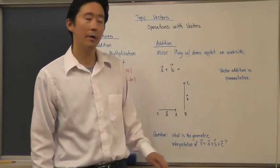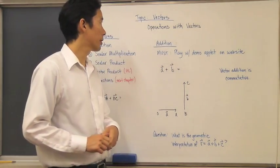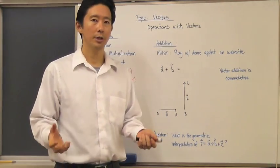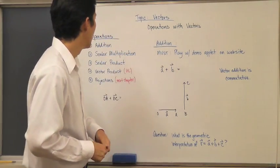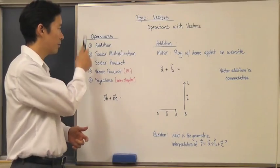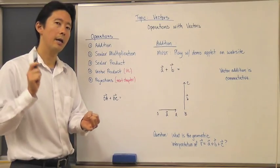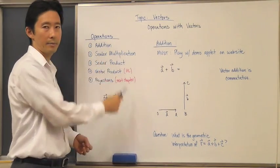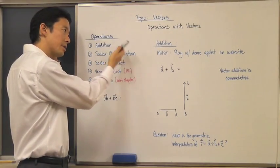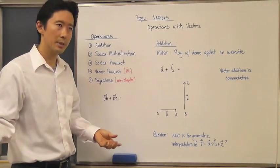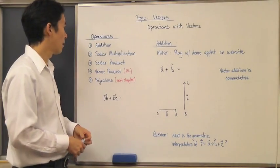Hello everyone. Now that we have an idea of some of the basics about vectors, we want to move forward and talk about some of the operations that we can perform with vectors. In general, there are really only four things that you need to be able to do with vectors both algebraically and geometrically. One, you need to add them together. Subtraction is just the addition of the opposite, so we're not really going to consider subtraction a different operation.